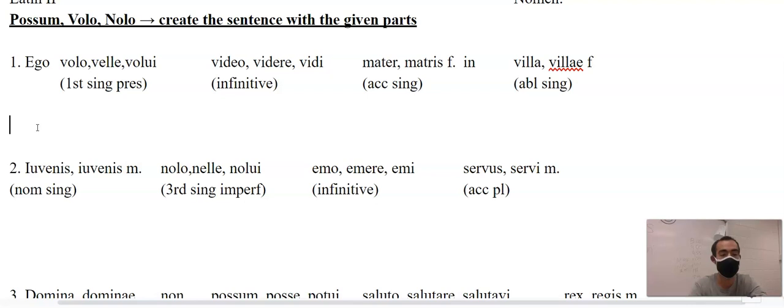So the first sentence, we've got ego. Ego is going to stay the same because that's our subject, that's I. It's going to be a first singular present tense form of volo, and that's the same thing, it's just volo. Anytime you see ego and you're going to make a verb, odds are it's going to have O at the end if it's present. Ego volo.